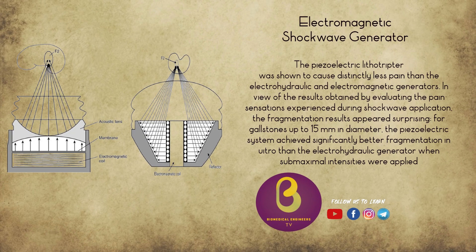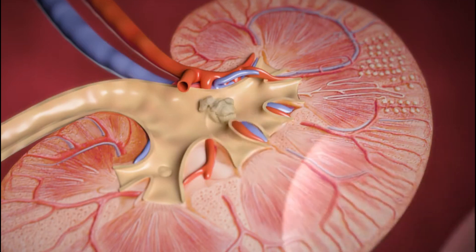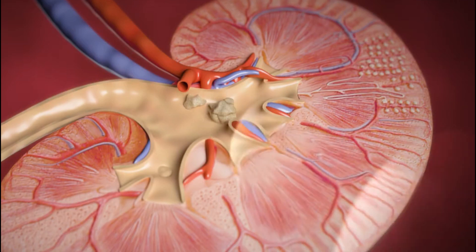The third type of shockwave generator is electromagnetic. In an electromagnetic generator, a high voltage is applied to an electromagnetic coil, similar to the effect in a stereo loudspeaker. This coil, either directly or via a secondary coil, induces high frequency vibration in an adjacent metallic membrane. This vibration is then transferred to a wave propagating medium — water — to produce shockwaves.